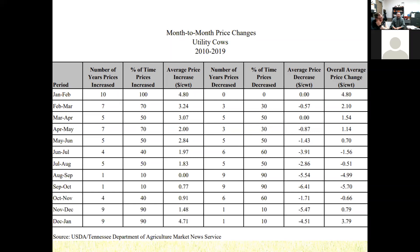That gives us an idea of what should happen. Looking at the far right column for December to January, the price increase of slaughter cows from December to January has averaged $4 per hundredweight. Then from January into February, there's another $4.80. So holding cattle from December into February would see nearly an $8 per hundredweight increase in price. At $8 times 12, that's $96 — nearly $100 of value.